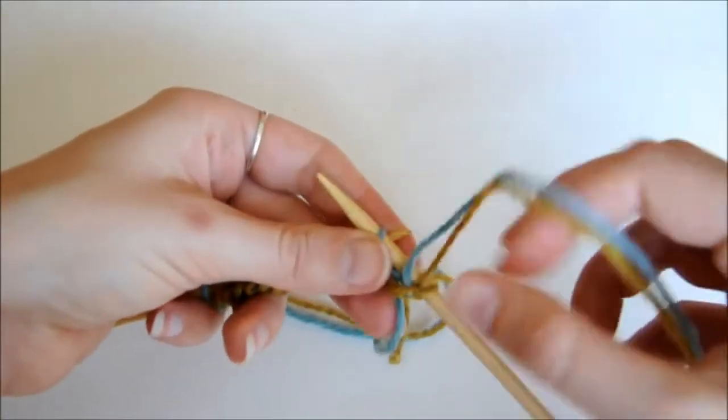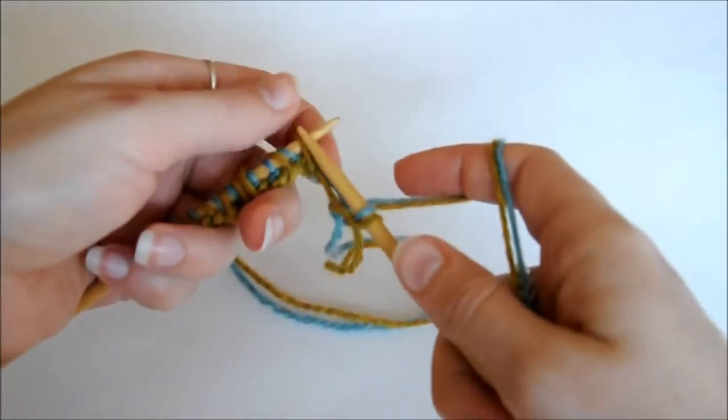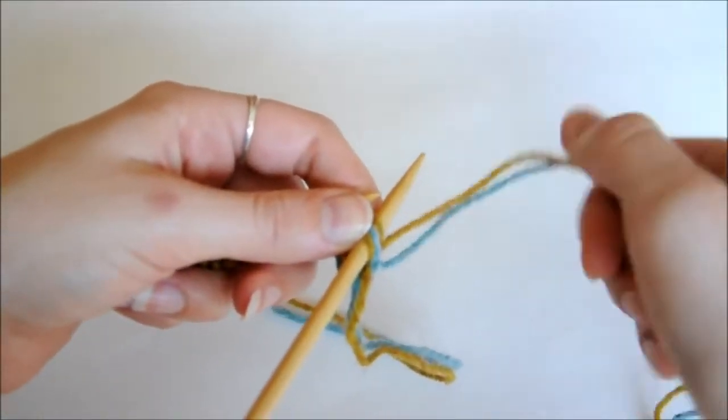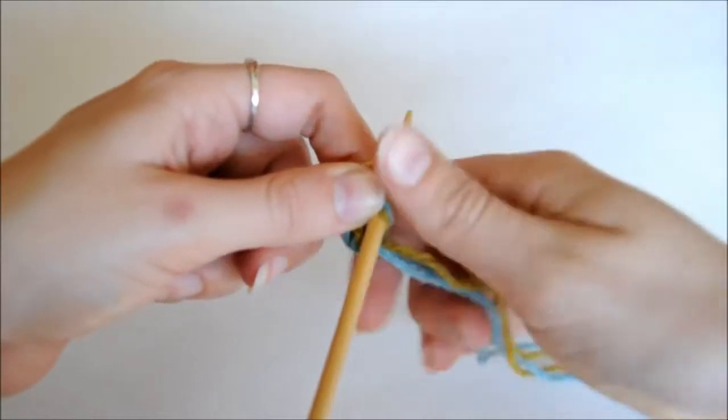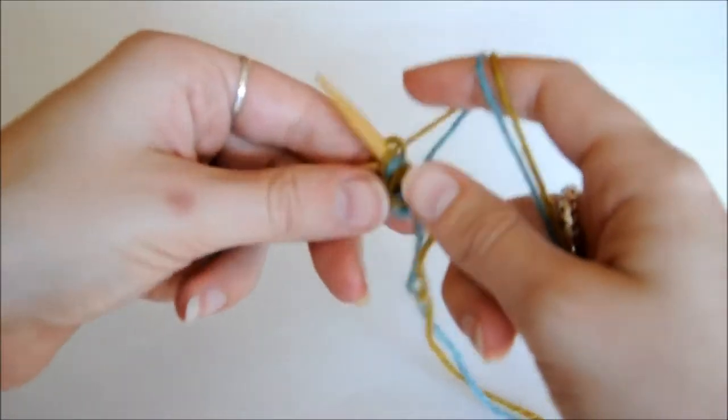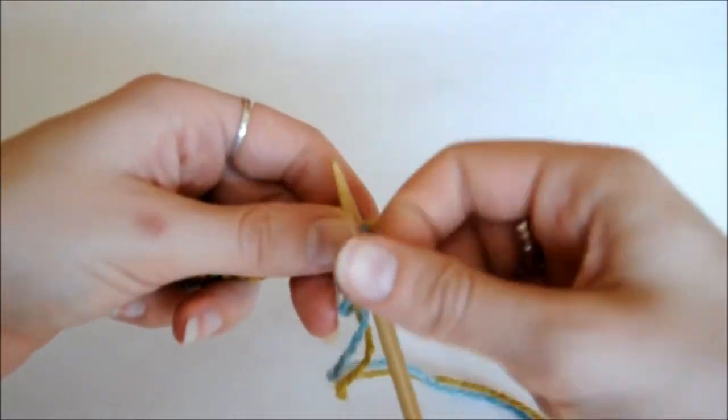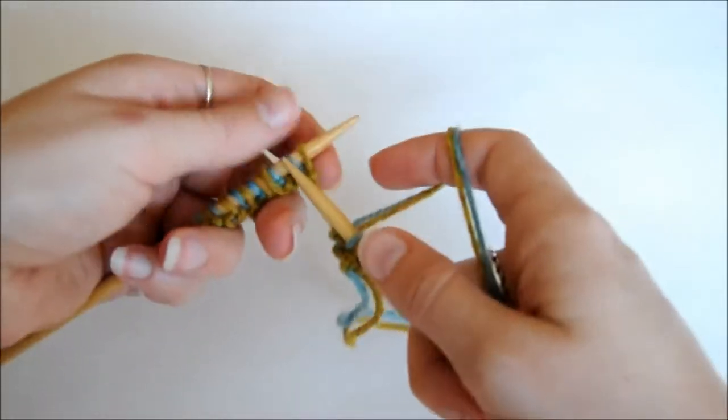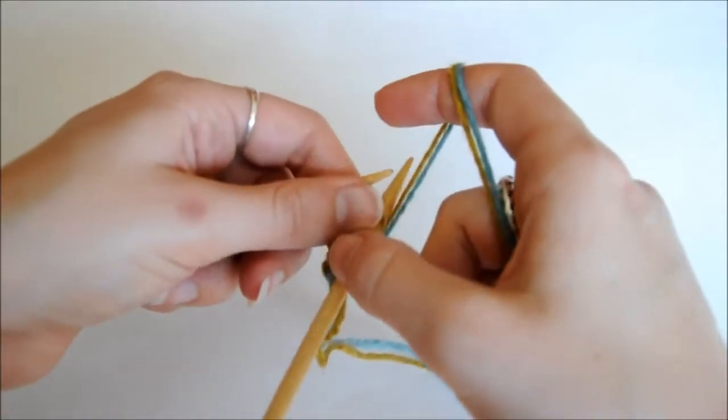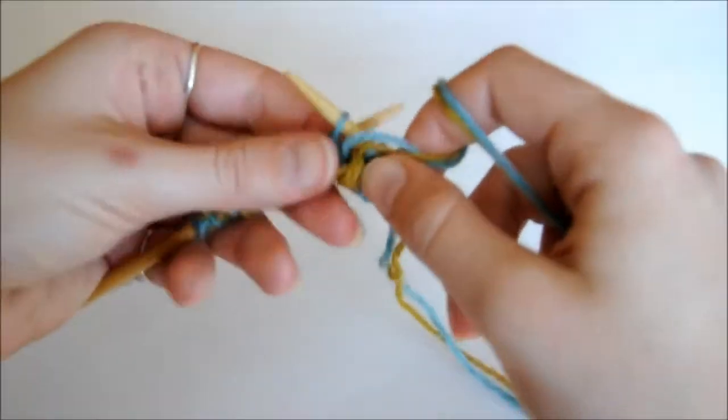And then we're going to purl the blues with the blues, and knit the yellows with the yellows, doing the opposite of what we did on the previous row. And when you bring your yarn to the front or the back, you want to make sure you don't twist it. The only place you want to twist your yarn is at the beginning of the row. If you twist it while you're working, you might end up with some lumps, and lumps aren't pretty.